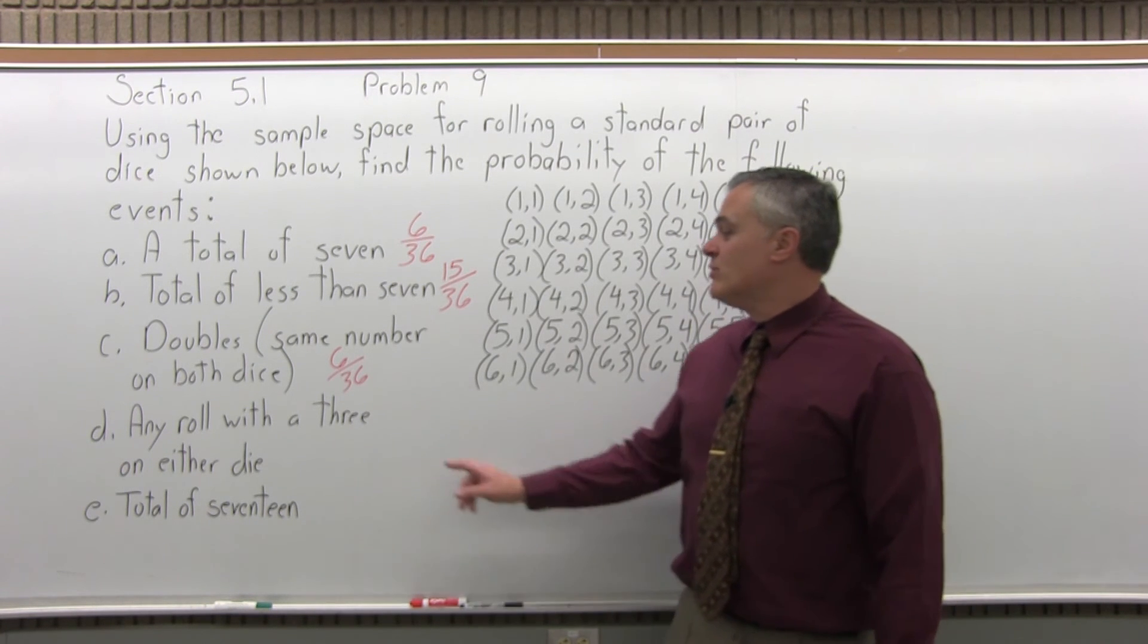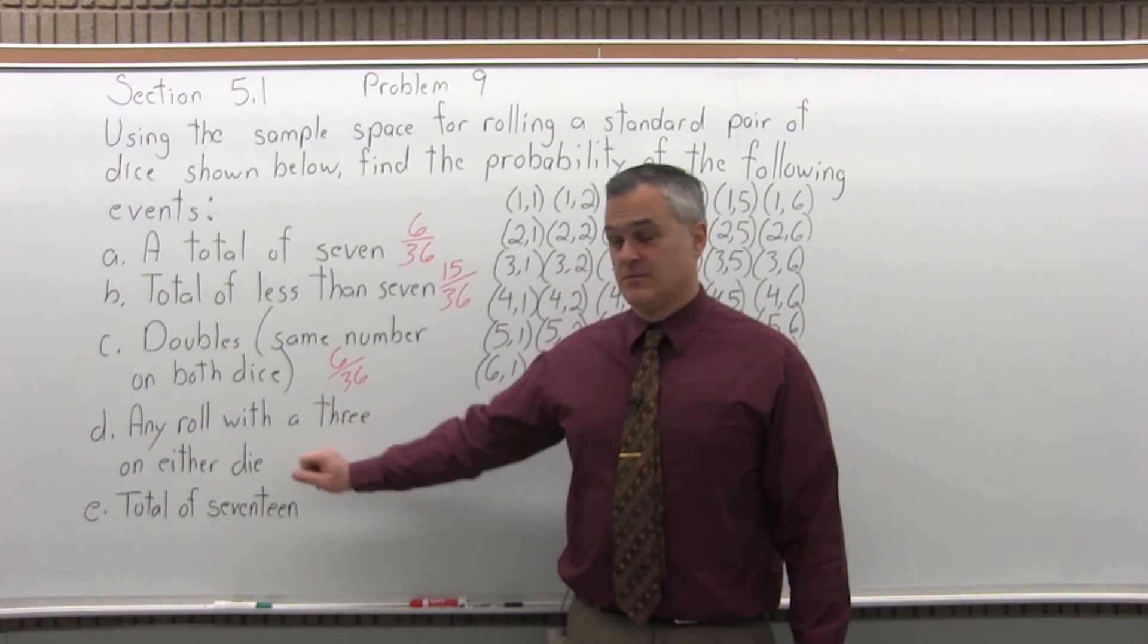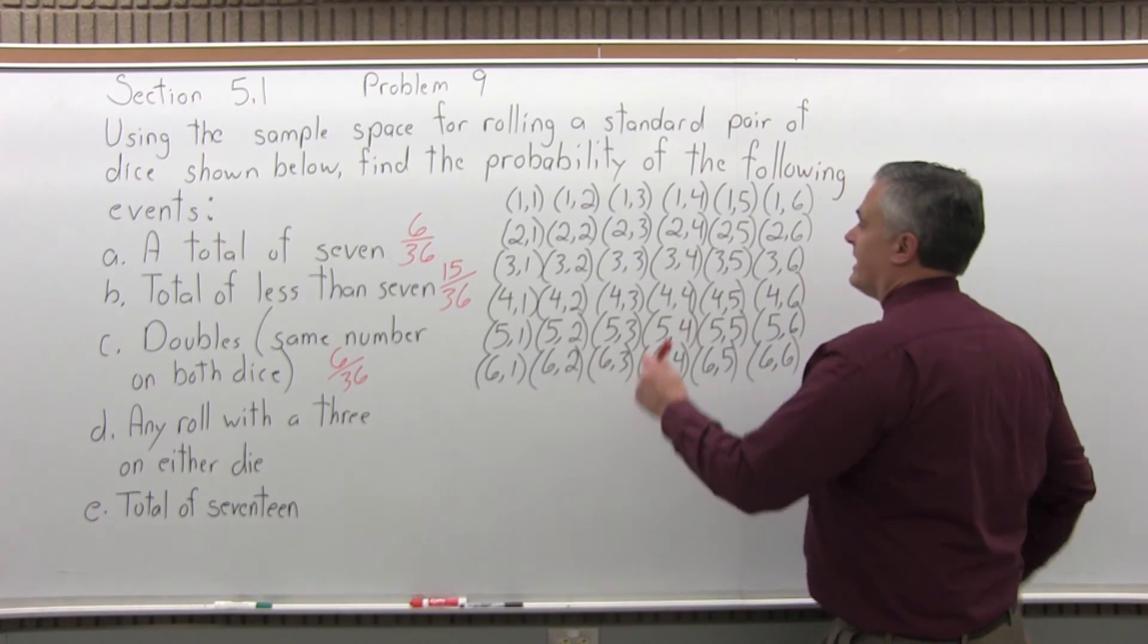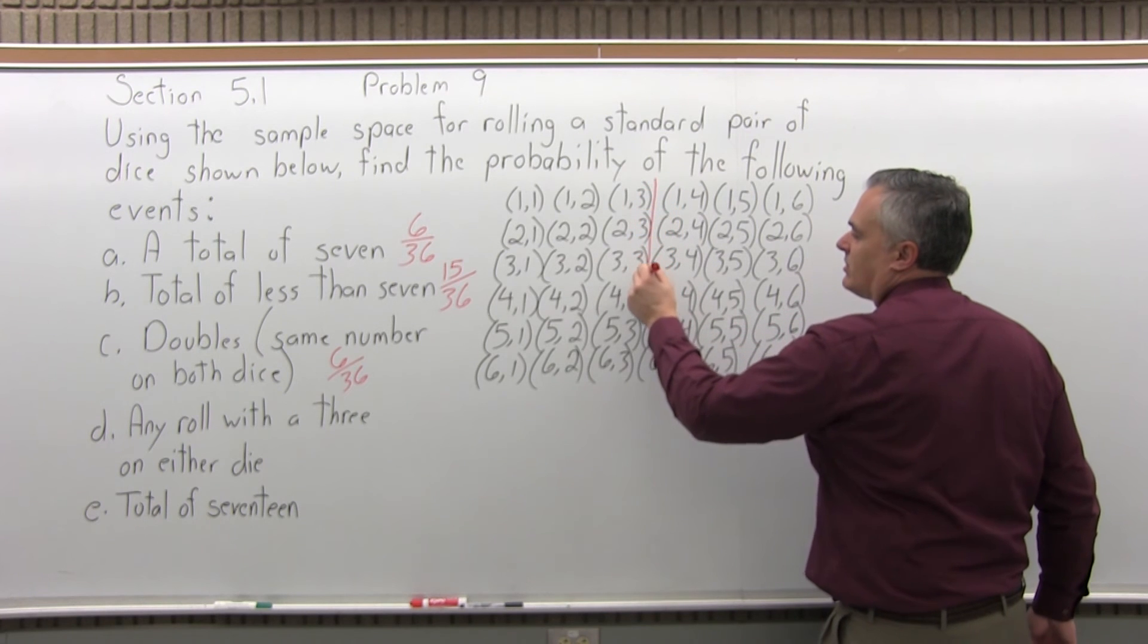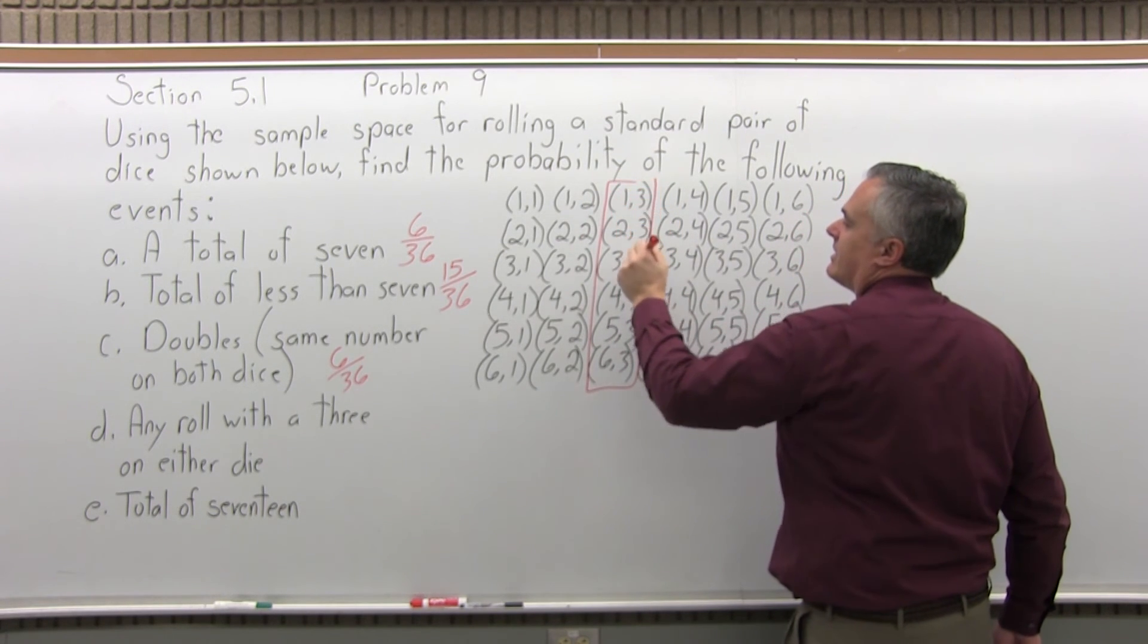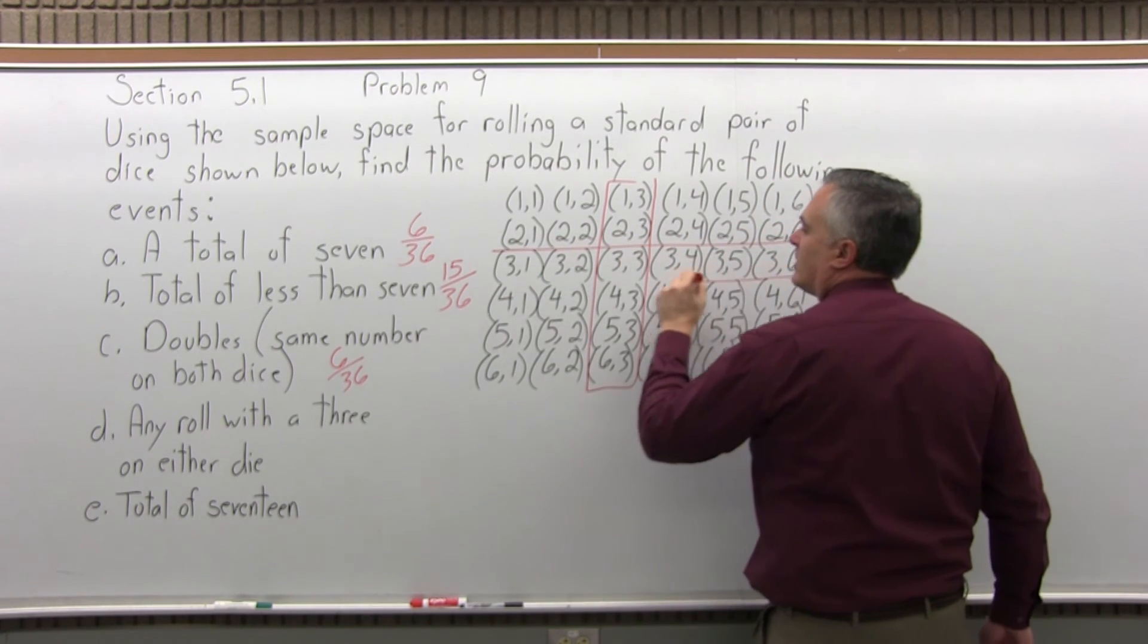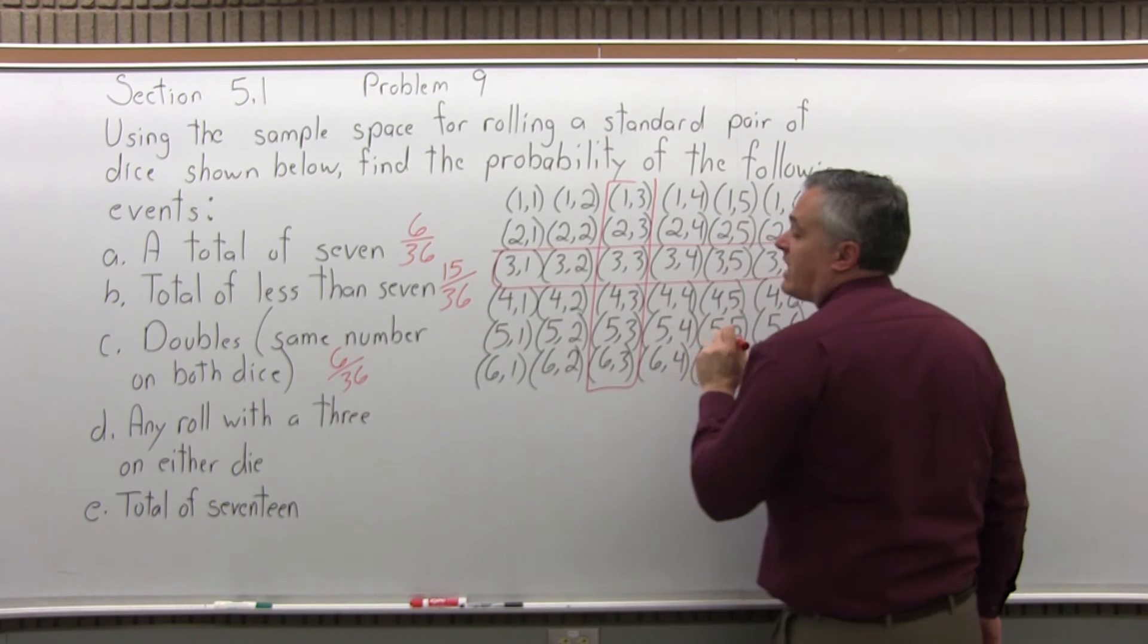D, any roll with a 3 on either die. So a 3 on either die. So here's a bunch of rolls that have a 3 on the second die, and then there are another group of rolls that have a 3 on the first die. So now if we count them up.